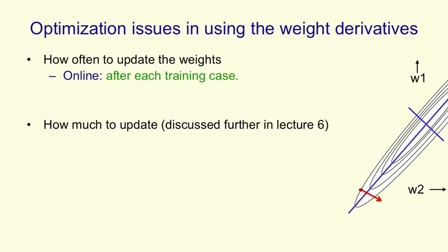But on average, if we make the weight changes small enough, it'll go in the right direction. What seems more sensible is to use full-batch training, where you do a full sweep through all of the training data. You add together all of the error derivatives you get on the individual cases, and then you take a small step in that direction.